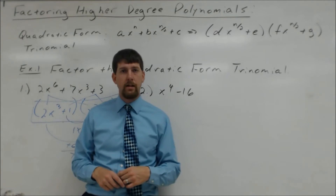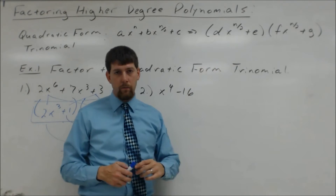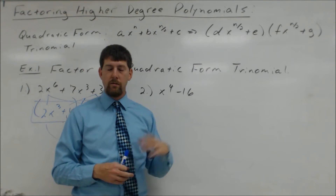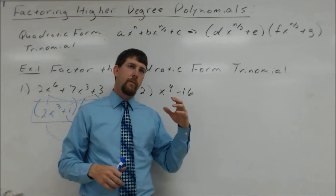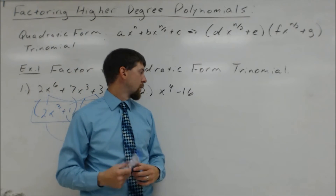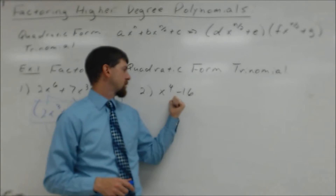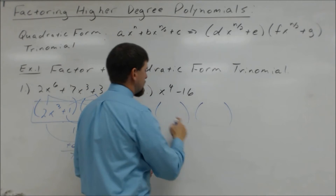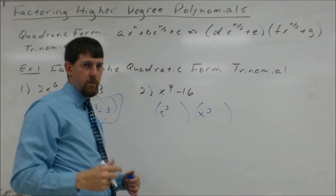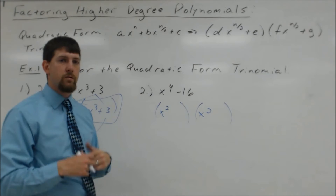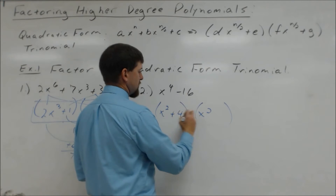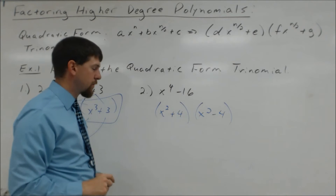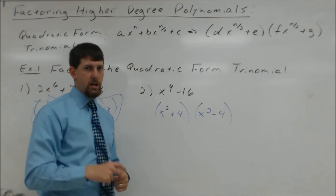On the second one, x to the fourth minus 16. This is like a quadratic — not a trinomial, but similar to a quadratic in that it's an even degree and it's a difference of two perfect squares. A variable to an even degree with a coefficient of 1 is going to be a perfect square. So we can treat x to the fourth minus 16 like a difference of two squares. Since x to the fourth is x squared times x squared, and 16 is also a perfect square, that tells us it's a difference of two squares. So 16 gives us plus 4 and minus 4. Checking: 4x squared minus 4x squared gives us no x's, which is what we have in the middle. So we get x squared plus 4 times x squared minus 4.